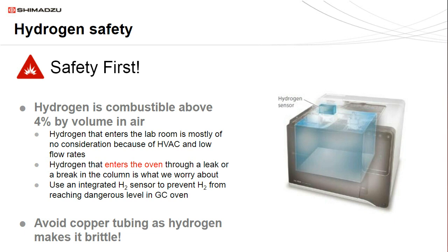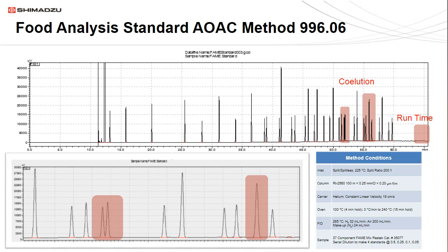Before we wrap up, I want to spend a couple of minutes talking about one specific project where we used hydrogen to improve a few different aspects of the analysis. We're looking at AOAC method 996.06, which is a FAMES analysis. In the method, it calls for a linear velocity of around 18 centimeters per second, which leads to a run time of over an hour, but it also leads to some co-elution in the second half of the run. So we wanted to address a couple of different parameters to improve this analysis. What we ultimately did is switch to hydrogen as a carrier gas and increased the linear velocity to 35 centimeters per second, more in line with the optimal linear velocity for hydrogen.